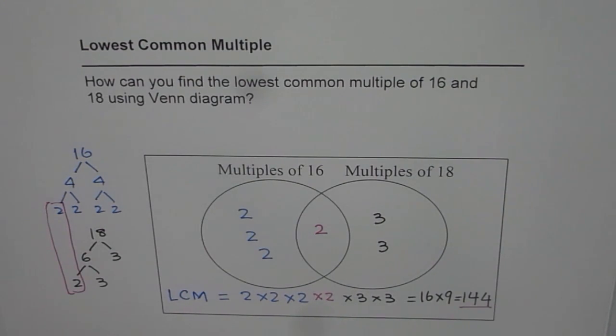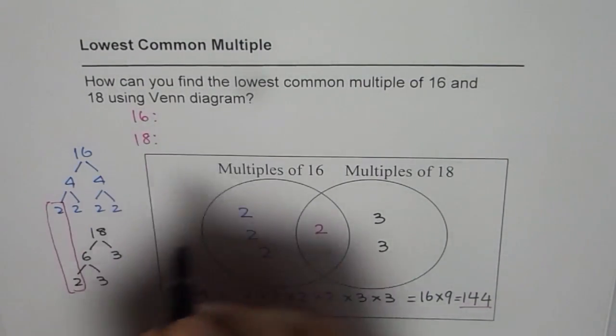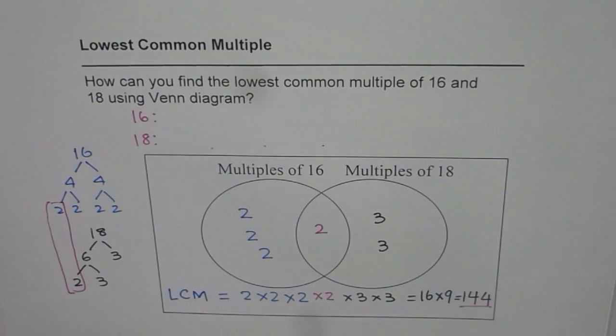How can you check it? You can write multiples of 16 and multiples of 18 and see where you have common multiples and which one is the lowest. You will get 144 as your answer. But I hope you understand this strategy.